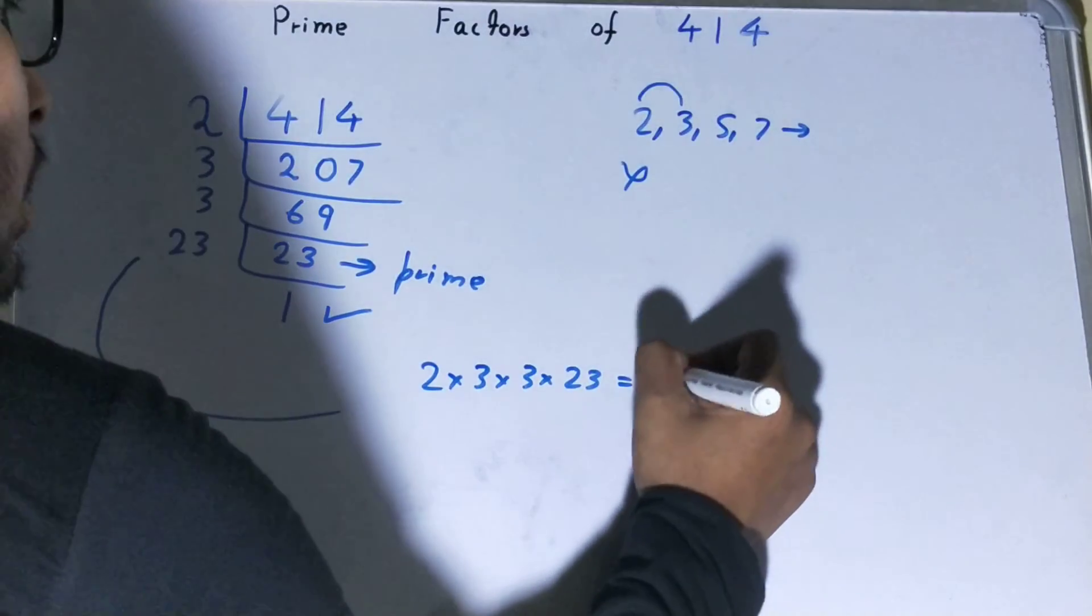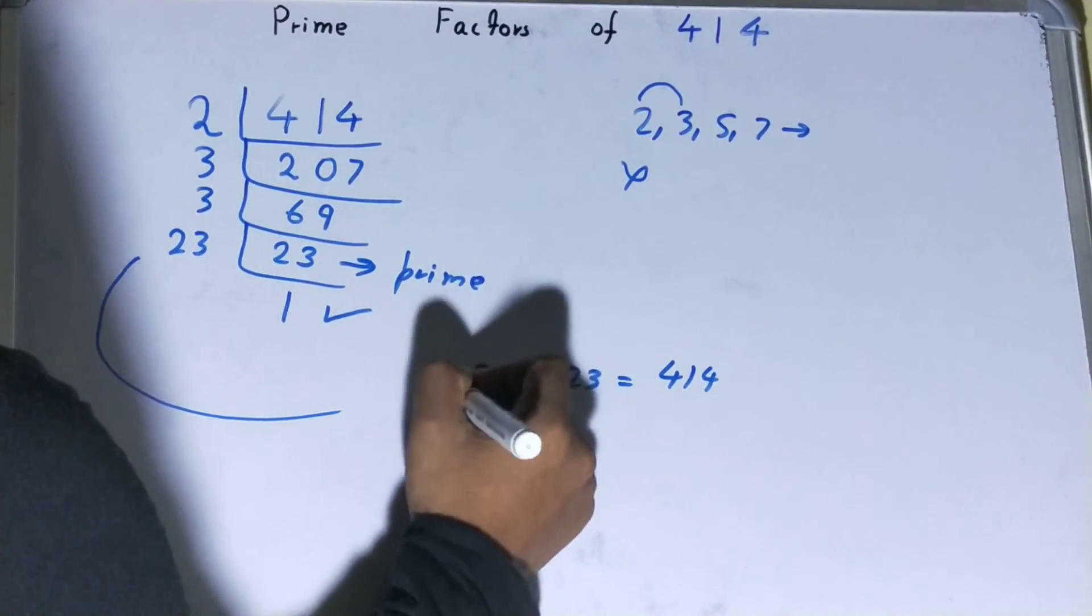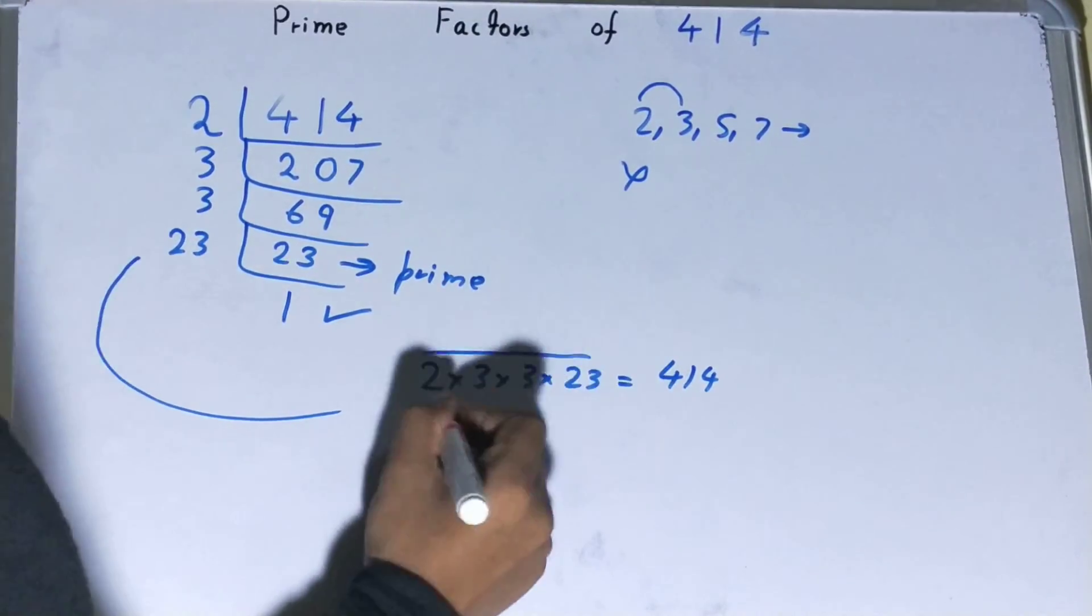If you want to check whether it is right or not, you can multiply them. If on multiplying you have the number back again, that means your calculation is correct. If not, you need to recheck. You can also write it in a different way.